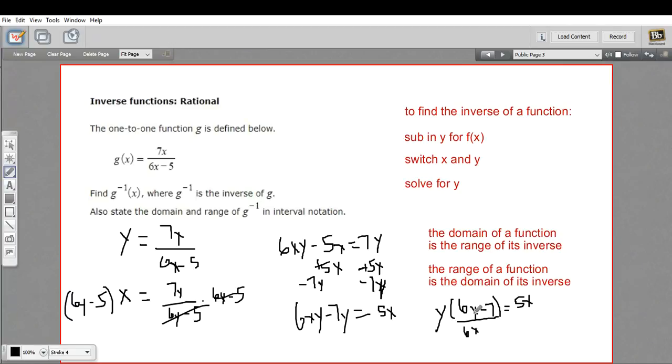Okay, so this is our inverse function. So g inverse of x is 5x over 6x minus 7. All right, now let's talk about domain and range.